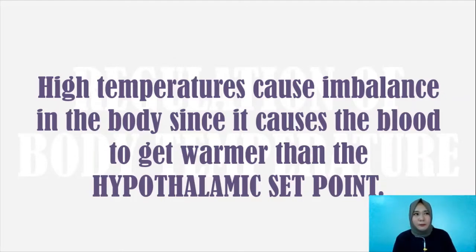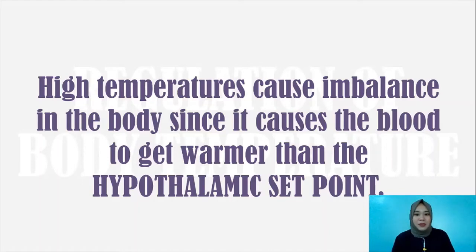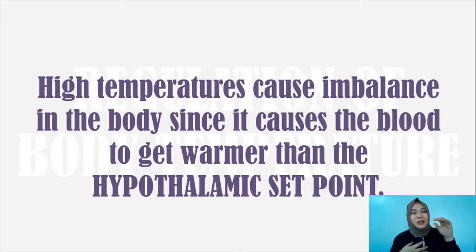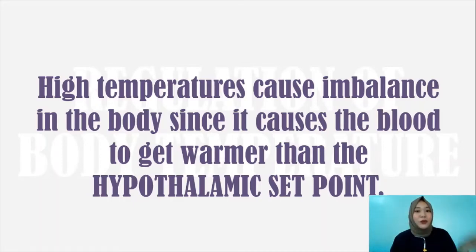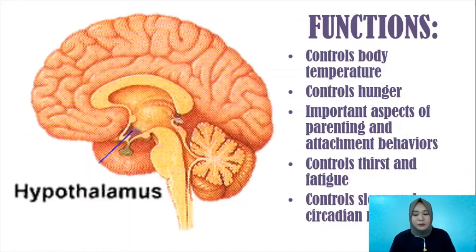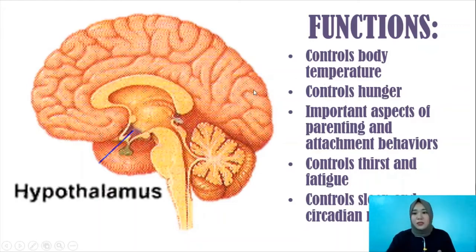If you remember from school, one part of the brain is called the hypothalamus. In a specific part of the hypothalamus, there is what we call the hypothalamic set point, which determines if the body temperature inside the body is stable. The hypothalamus controls body temperature, hunger, thirst, fatigue, parenting and attachment behaviors, sleep, and circadian rhythms. Most importantly, we will focus on how the hypothalamus controls body temperature.